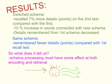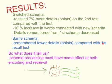The results showed that participants whose schemas were switched — for example, starting with the burglar perspective but recalling from the house buyer perspective — recalled 7% more details on the second test. There was also a 10% increase in words connected with the new schema; those switched to the house buyer schema recalled more details like the leaky roof and the nice neighborhood. Meanwhile, participants who kept the same schema for the second recall test remembered fewer details overall compared with their first test.